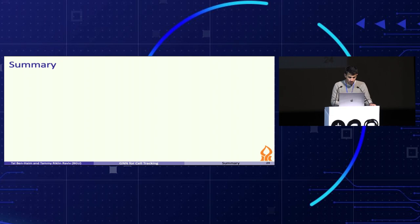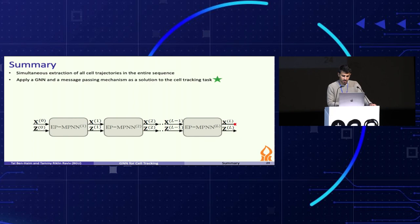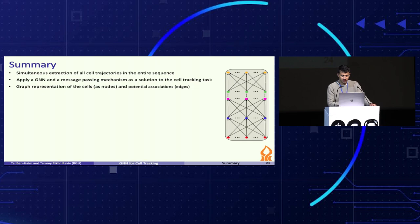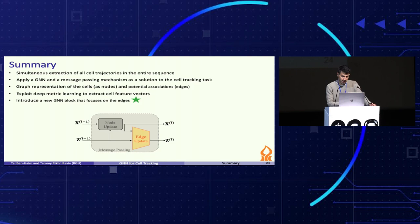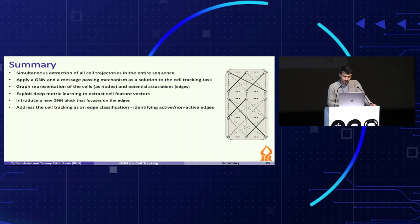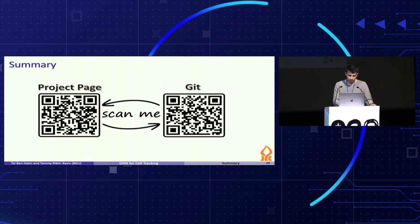To summarize our approach, we simultaneously extract all cell trajectories in the entire sequence. We are first to apply a GNN and message passing mechanism as a solution to the cell tracking task. We represent cell instances and their features as nodes in a directed graph and connect them by edges, which represent potential association in consecutive frames. We learn features that cluster together same cell instances and separate cell instances that are not of the same biological cell. We focus on edge features and introduce a new GNN block that enables mutual node and edge feature updates. We address cell tracking as an edge classification problem for identifying active and non-active edges. The proposed framework is shown to outperform most current state-of-the-art cell tracking methods for a variety of well-known publicly available microscopy datasets. Thanks for listening. Our code is publicly available and you're welcome to visit our project page on GitHub.